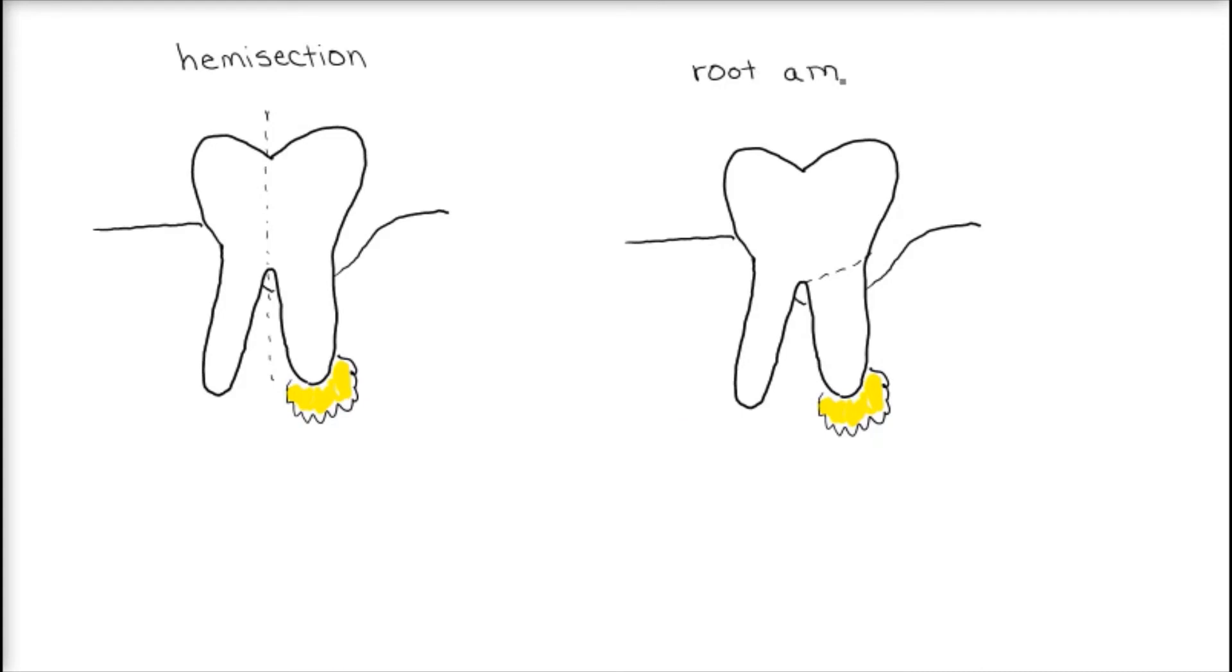A horizontal root resection, on the other hand, involves amputating the root and preserving the crown. It is usually done to preserve existing prostheses.